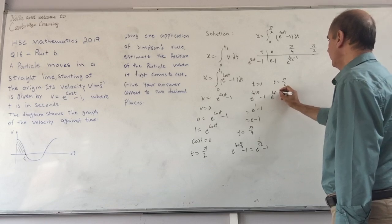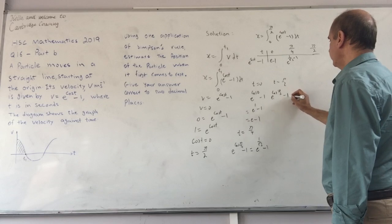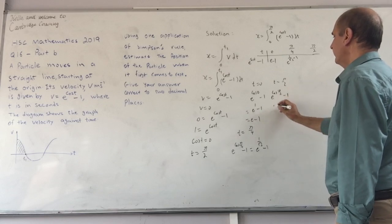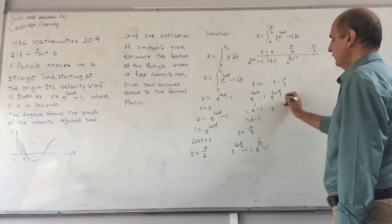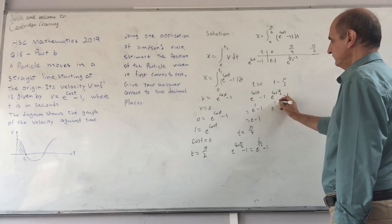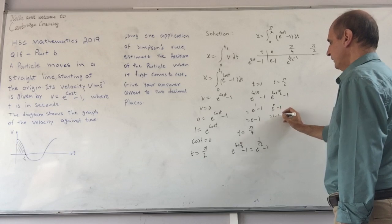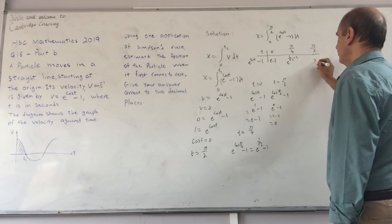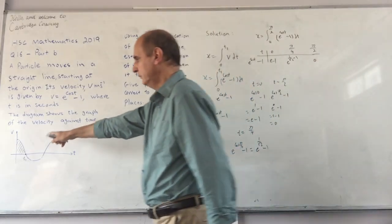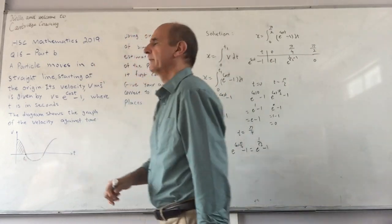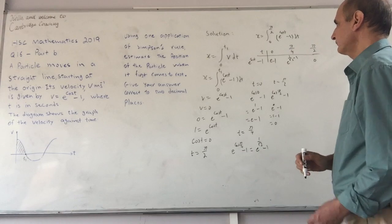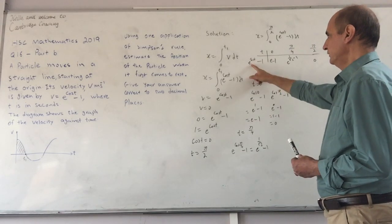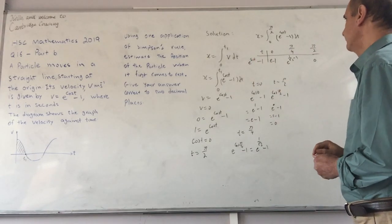If I substitute t equals π/2, my function value becomes e to the power of cos π/2 minus 1, which becomes e to the 0 minus 1. That equals 1 minus 1, which equals 0. And we already know that when it's π/2, the velocity is 0.